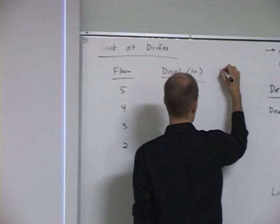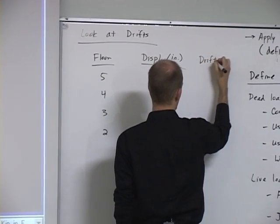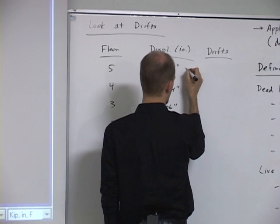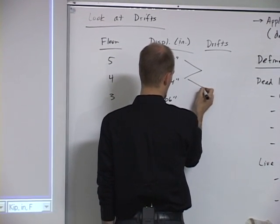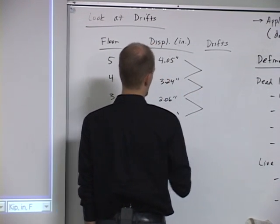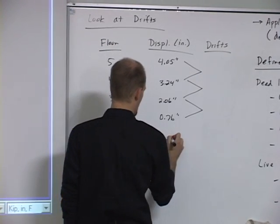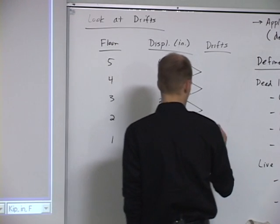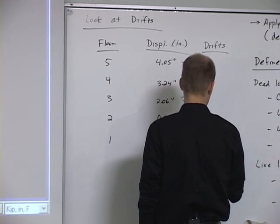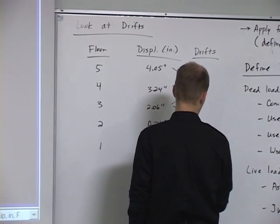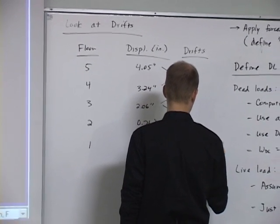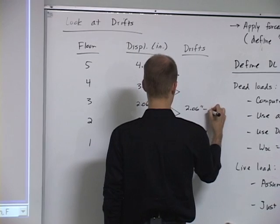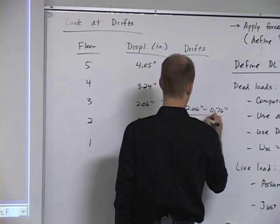So now from the displacements, then we can calculate drifts. So we're going to have a drift for each of these. And of course, story one is zero, so we're going to have that drift. So this bottom drift is going to be 0.76 inches over 15, or actually I guess we did 13 feet. And then this one is going to be 2.06 minus 0.76 over 13 feet.